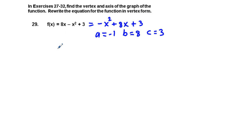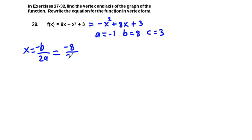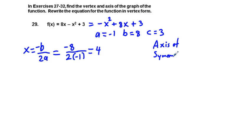We're not going to use c here. Again, our axis of symmetry formula is x equals negative b over 2a. That is going to be negative 8 — because b is 8 — over 2 times a, and a is negative 1. So what we have is negative 8 divided by negative 2, which is 4. For our axis of symmetry, x equals 4.